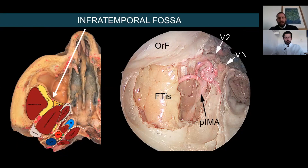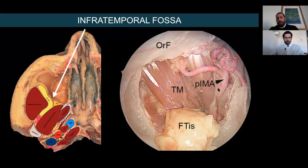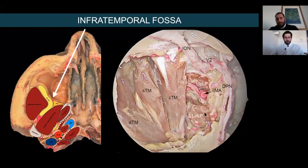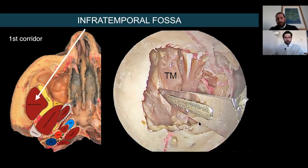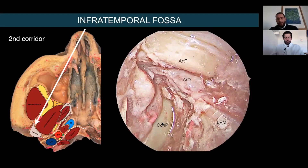Now we go toward the infratemporal fossa. This is the maxillary artery and the fat in the infratemporal fossa. When you remove the fat, you can identify the bellies of the temporal muscle in one direction, and more medially the horizontal bellies of the lateral pterygoid muscle — inferior belly, superior belly. We can now identify different corridors: if you go between the bellies of the temporal muscle, you can reach the coronoid process of the mandible. If you go between the temporal muscle and the pterygoid muscle in this fissure and proceed forward, you identify the condylar process of the mandible — this is the articular disc and the TMJ.